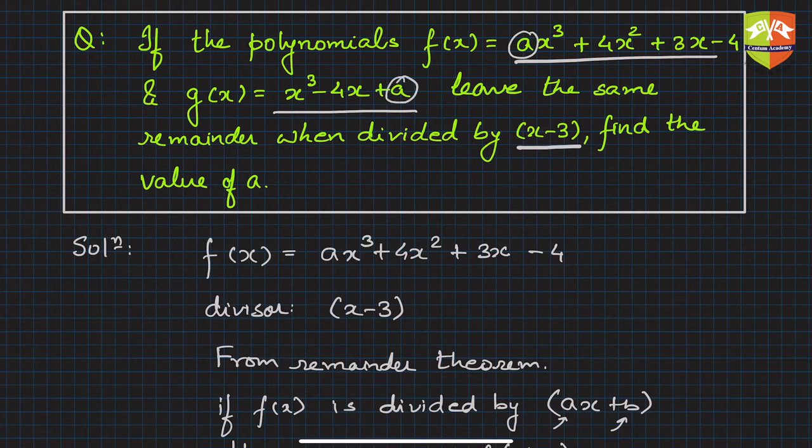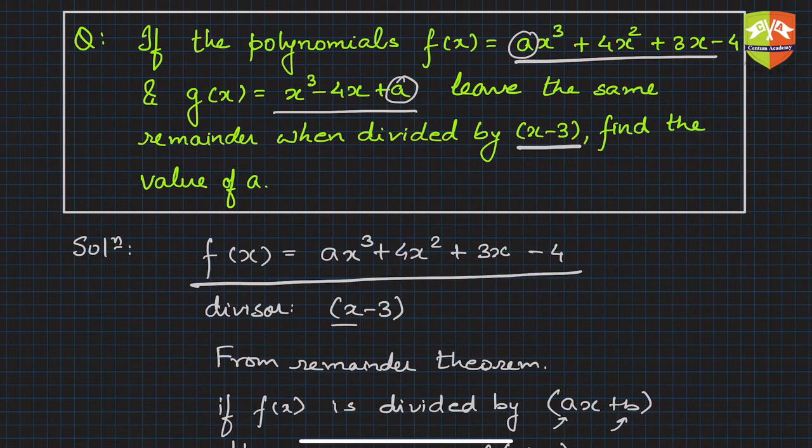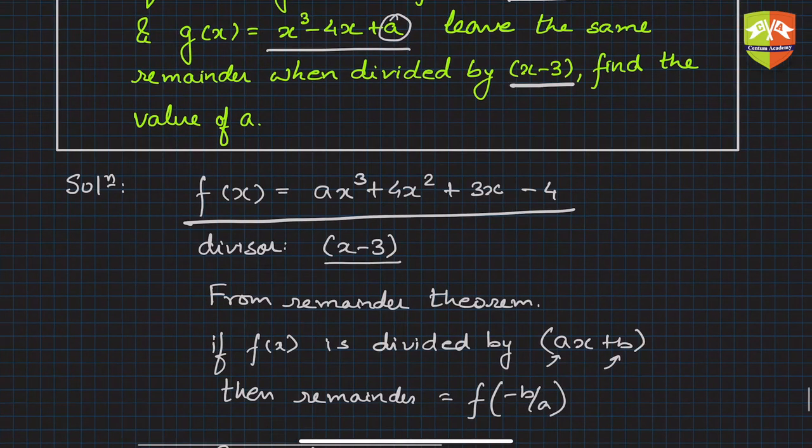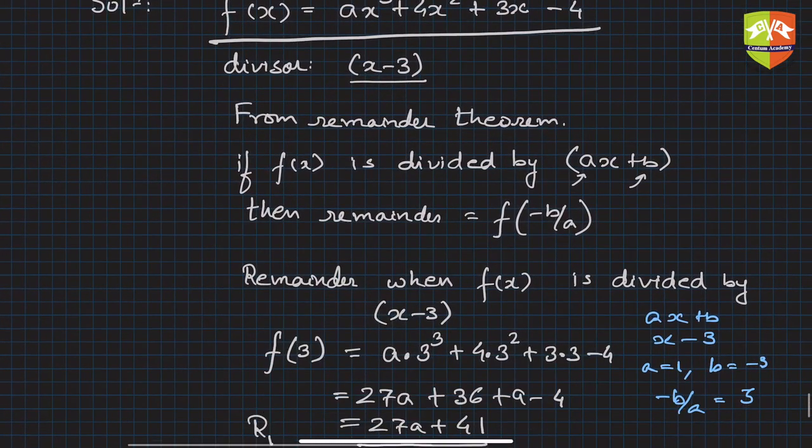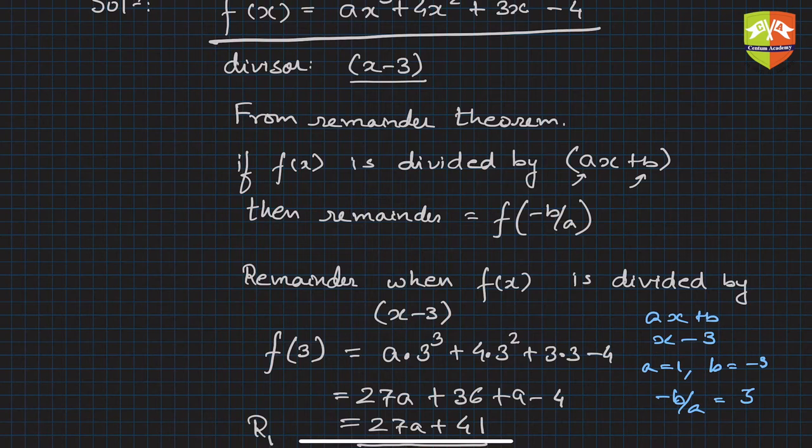We have written f(x) and the divisor is (x - 3). From remainder theorem, if f(x) is divided by (ax + b), then the remainder will be f(-b/a). The remainder will be the value of the polynomial if you replace x by -b/a.